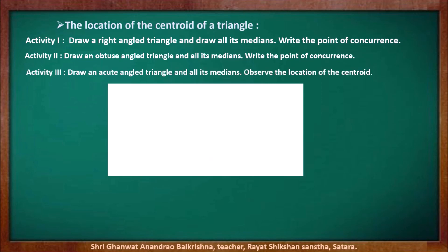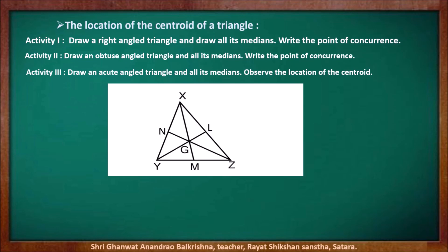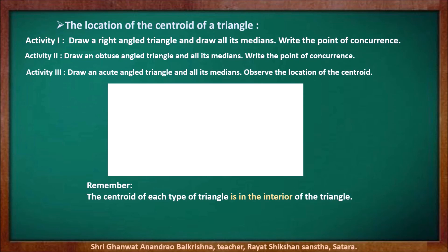Now for the third activity, draw an acute-angled triangle and draw its medians. Observe the location of the centroid. We have drawn here triangle XYZ. Segments XM, YL, and ZN are the medians of the triangle, and point G is the centroid. We observe that point G, which is the centroid, is in the interior of the triangle. So in the case of all three types of triangles, the location of the centroid is in the interior of that triangle. Remember that the centroid of each type of triangle is in the interior of that triangle.